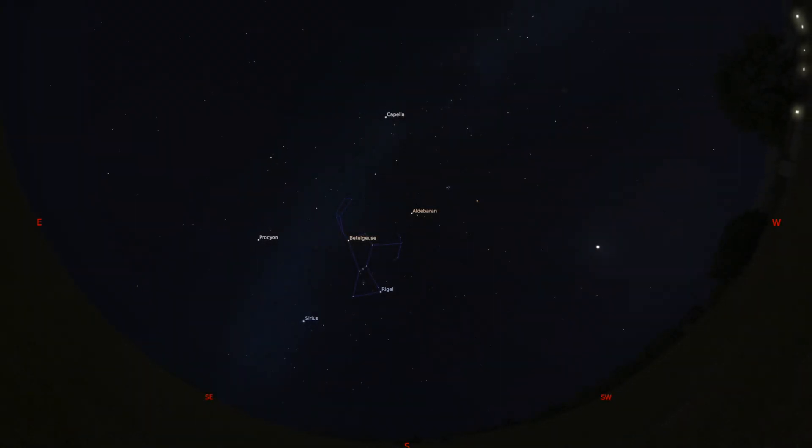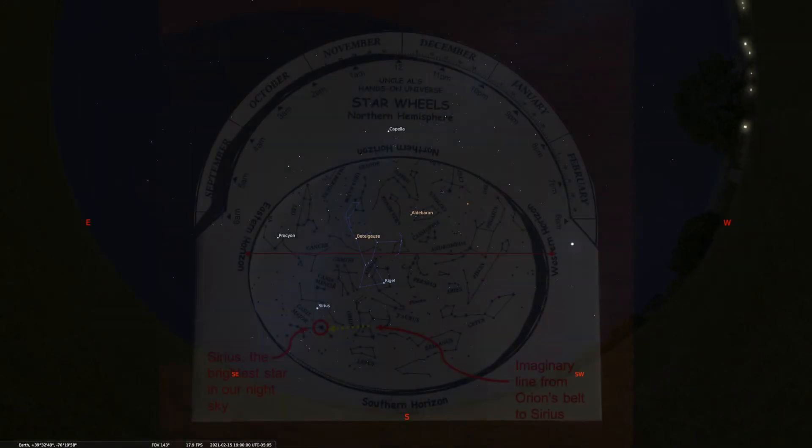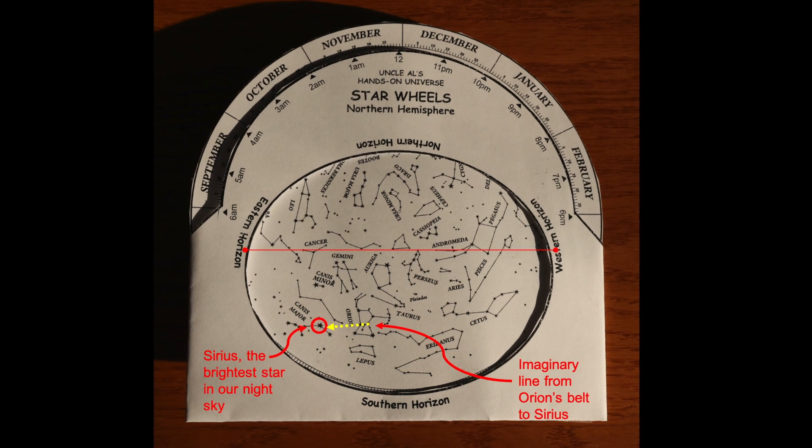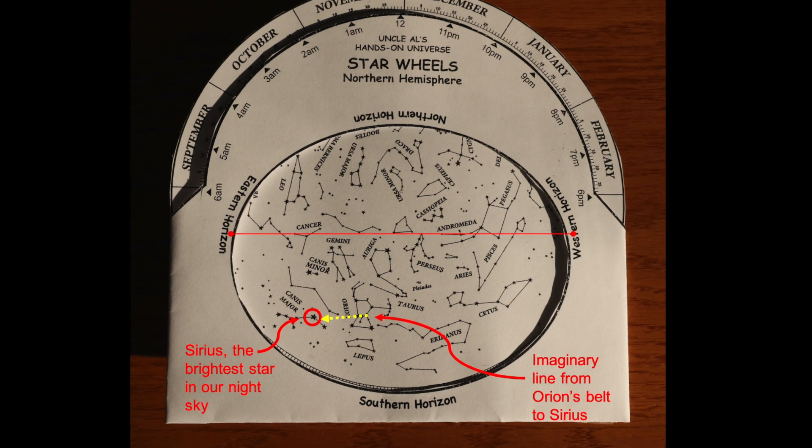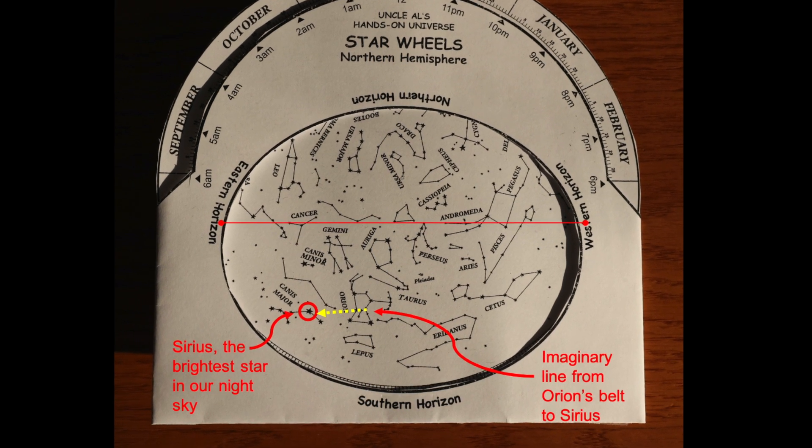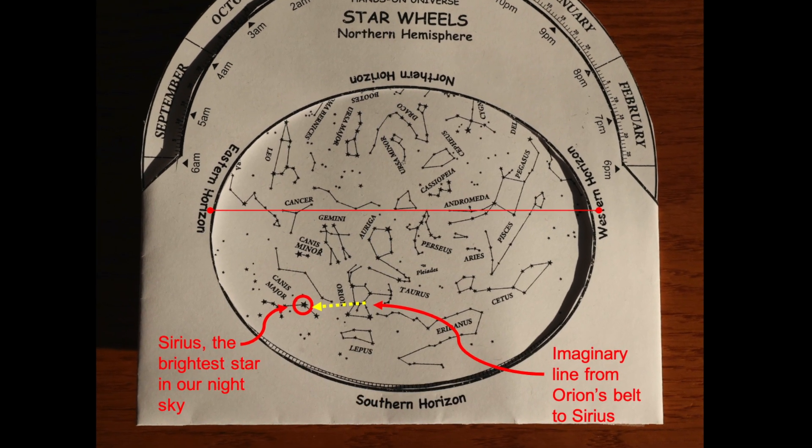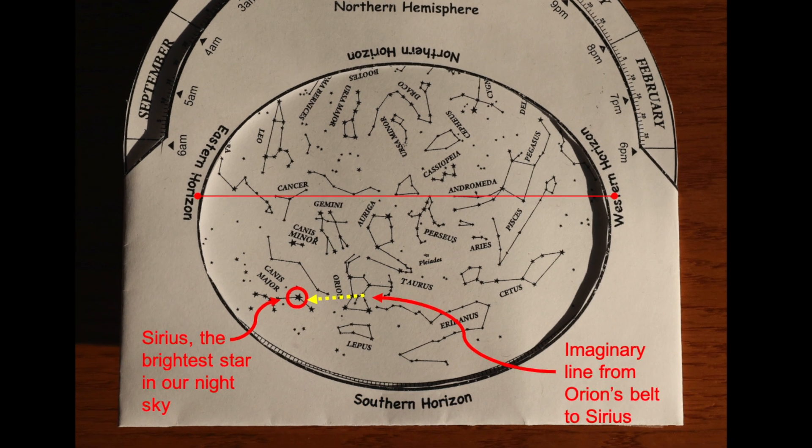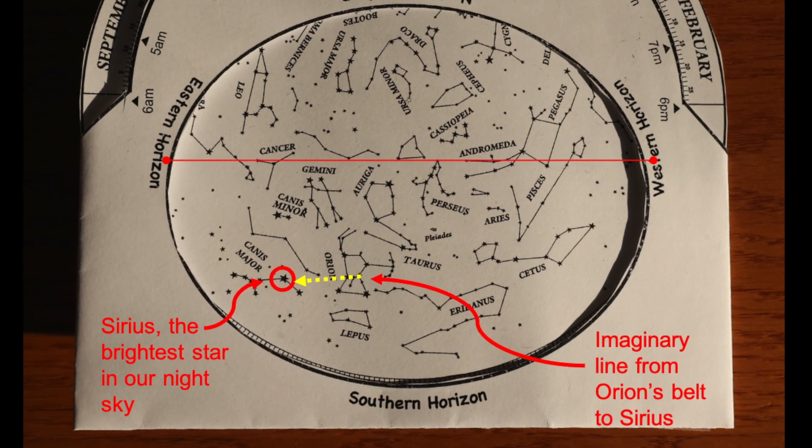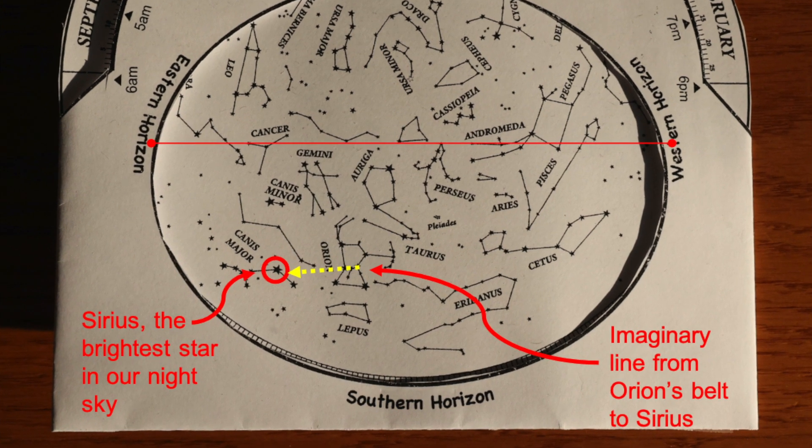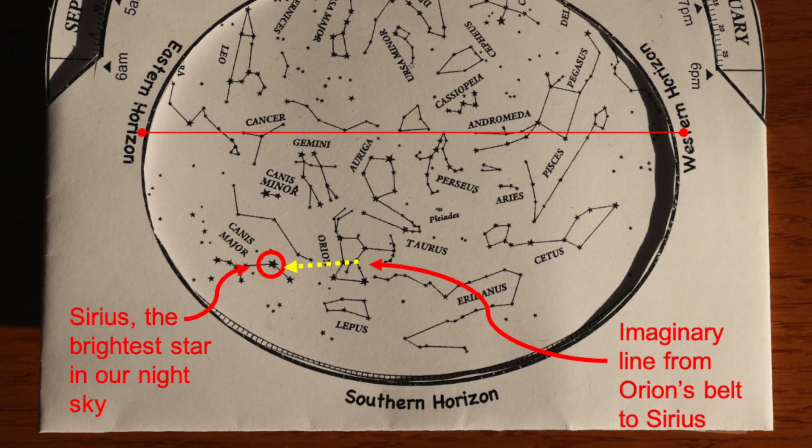Now that we can find Orion, we can use it and the planisphere to find other things, like Sirius, the brightest star in our night sky. If you look at the planisphere, and we imagine Orion's belt as a line, well if we extend that line of Orion's belt to the left, it points straight at a really bright star in Canis Major. That is the star Sirius, the brightest star in the northern hemisphere night sky. Let's see if this works in the real sky.